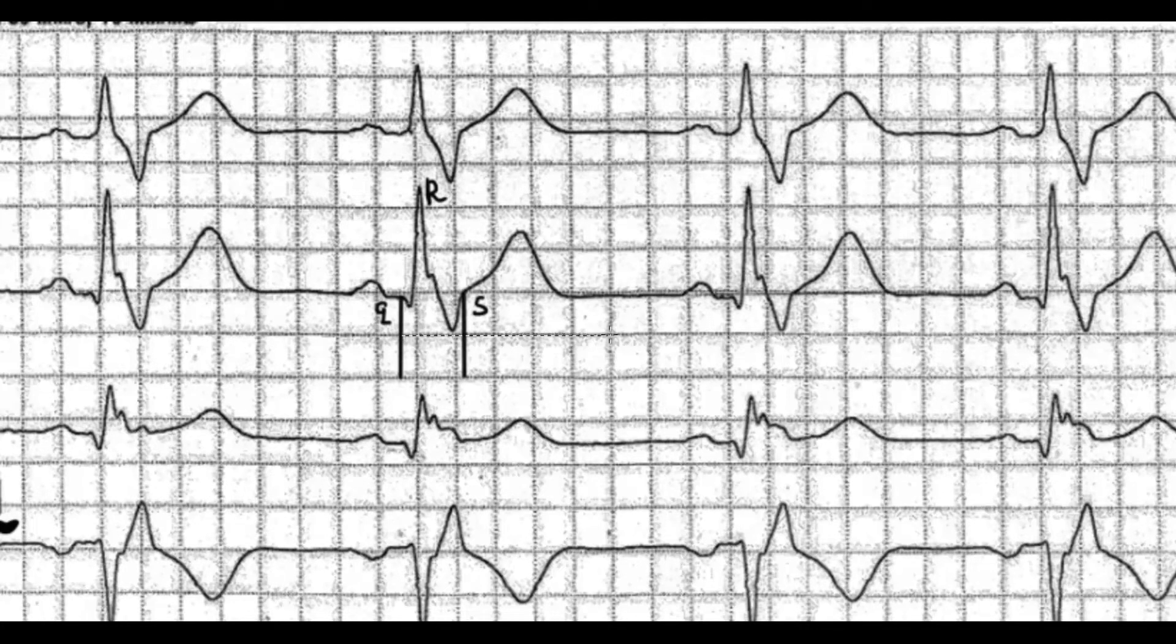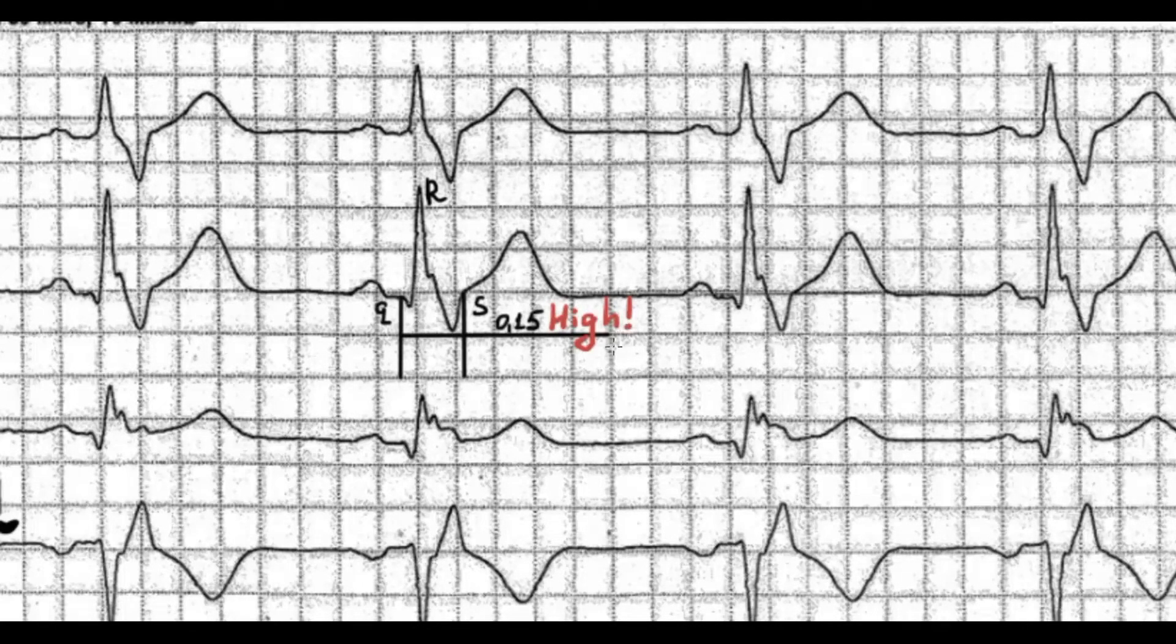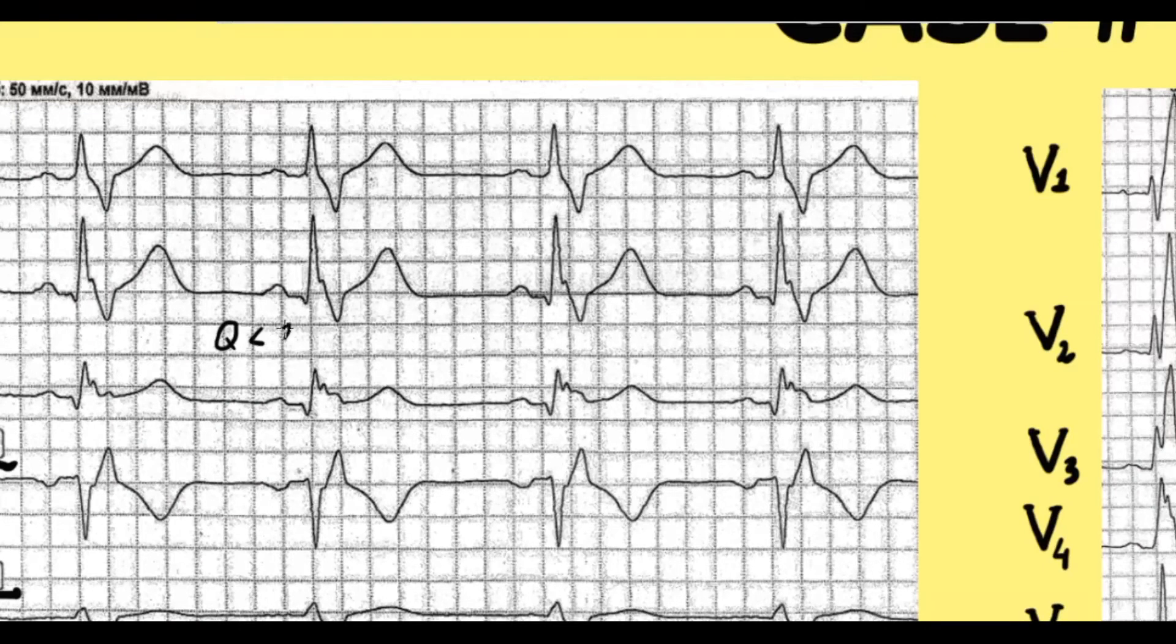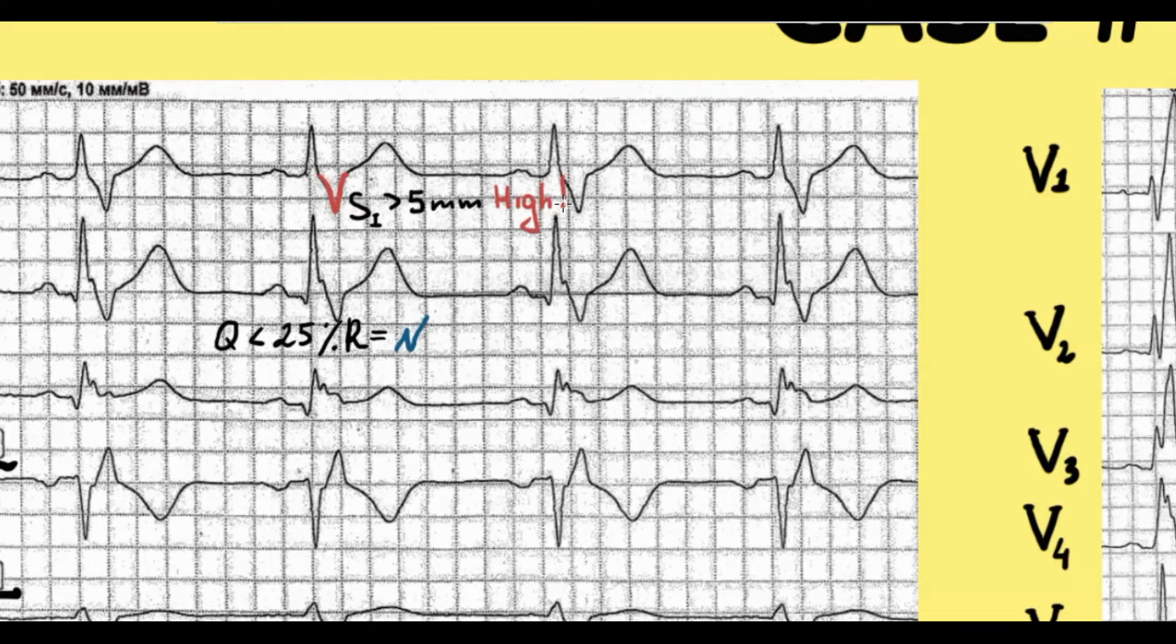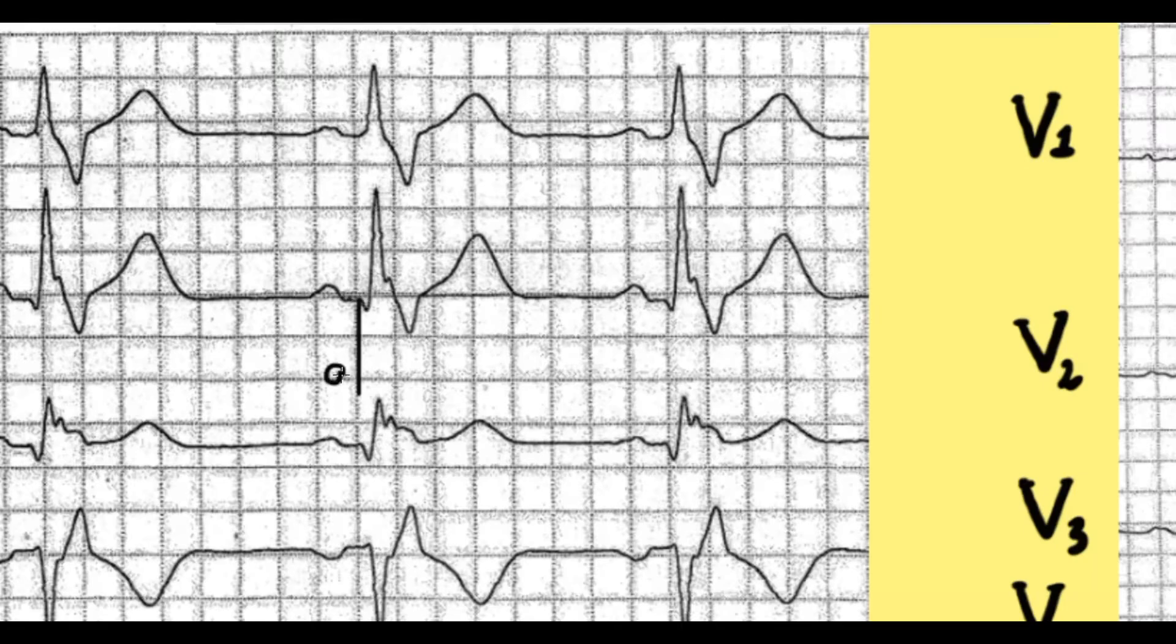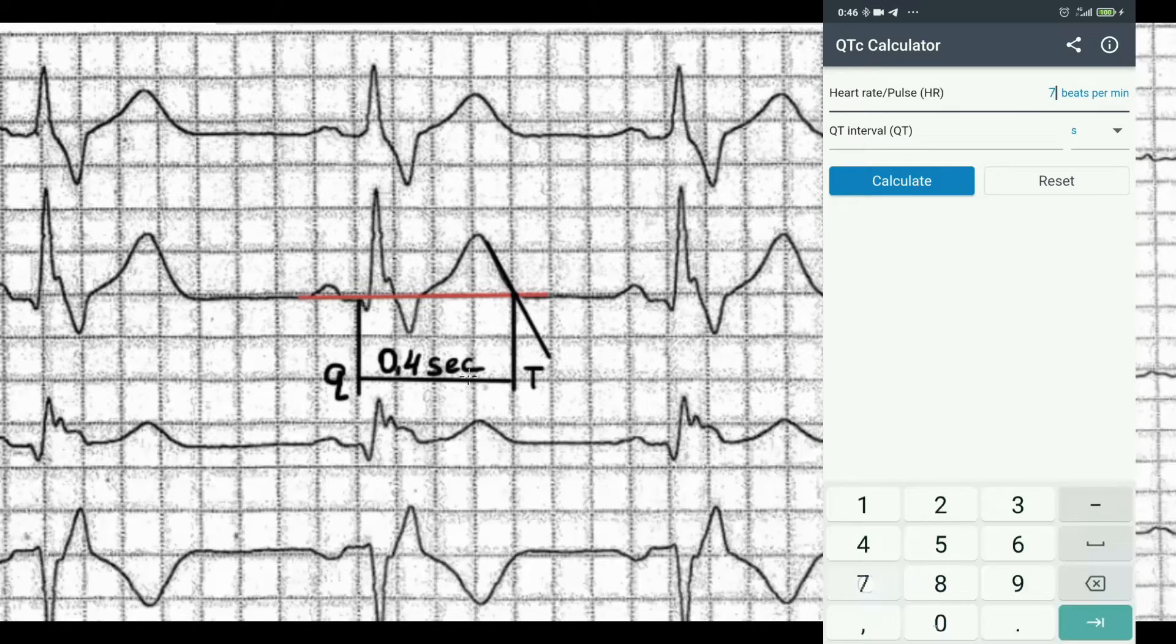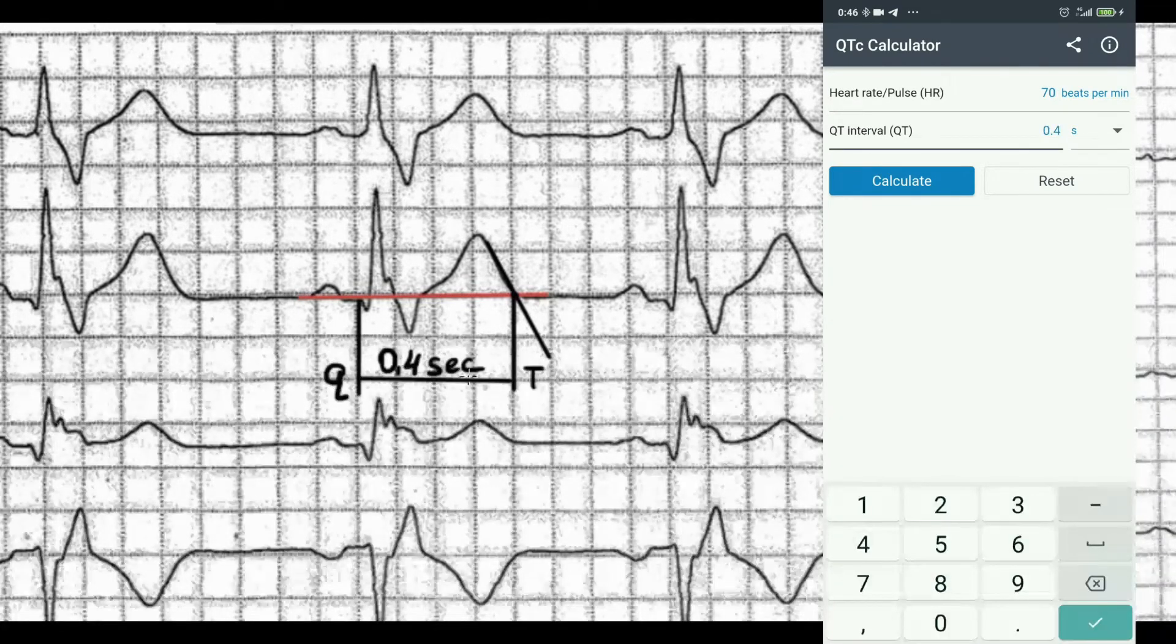PQ interval is 0.16 seconds which is also normal. QRS complex duration is 0.15 seconds which is higher than normal. Q wave is okay. Amplitude of S wave in first standard lead is higher than normal. QT interval and corrected QT interval also in normal range.